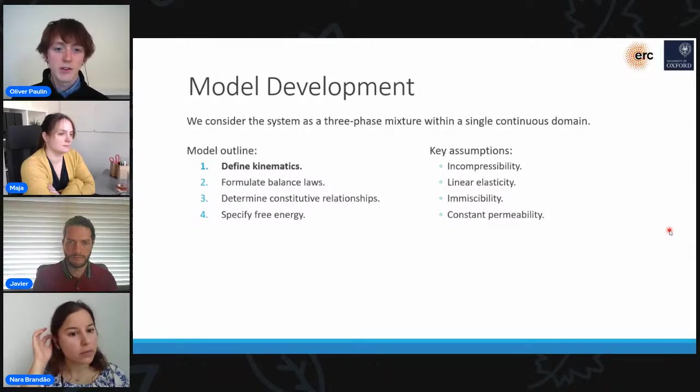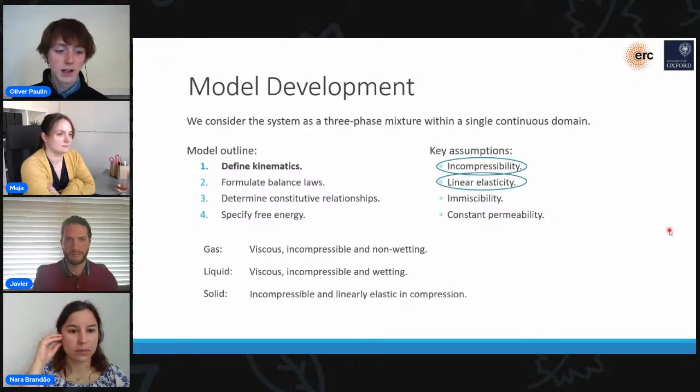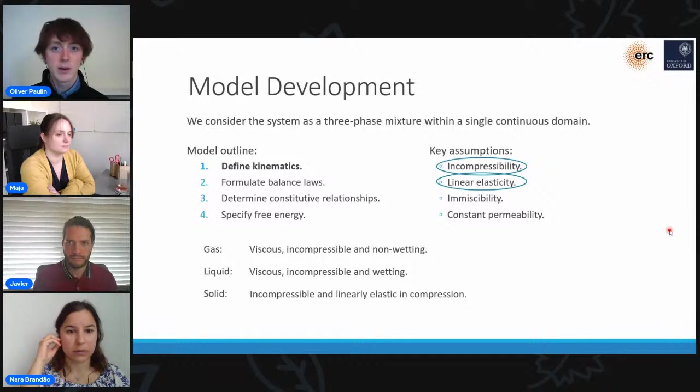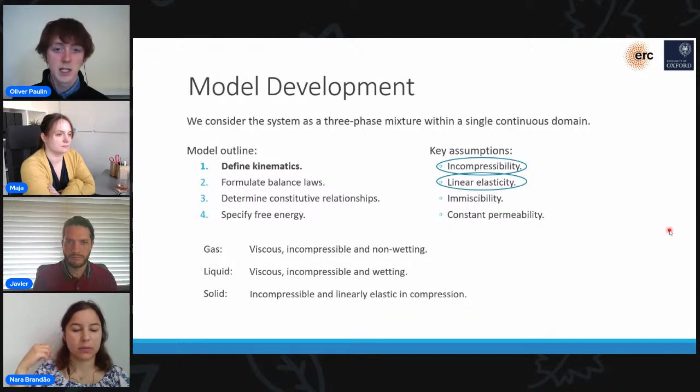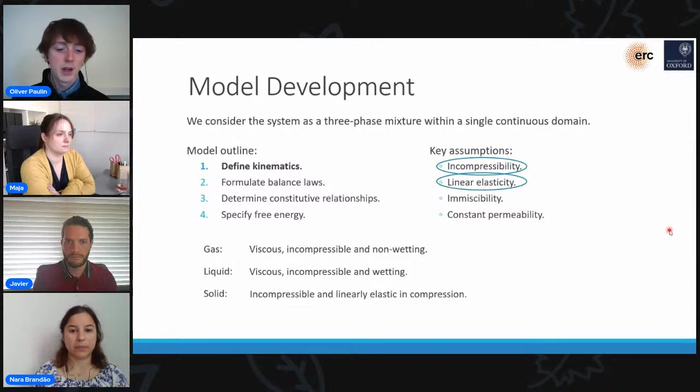So essentially we consider the system as being a three-phase mixture consisting of gas, liquid, and solid. We model the gas and liquid phases as being viscous incompressible fluids, with the gas being the non-wetting fluid and the liquid being the wetting fluid. For the solid phase, we also assume that it's locally incompressible and that it's linearly elastic when in compression. When it's in tension, however, because we're considering non-cohesive granular materials, we assume there's no resistance to this. We quantify the presence of these different phases through the relative volume fraction phi, and these three volume fractions—the gas, liquid, and solid—all just sum up to one.